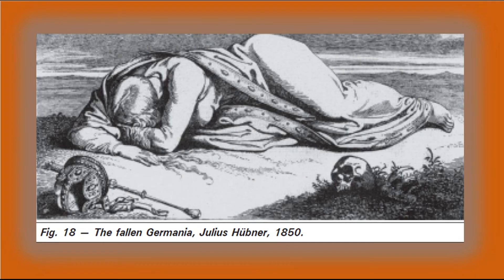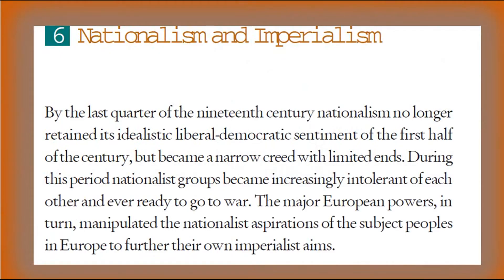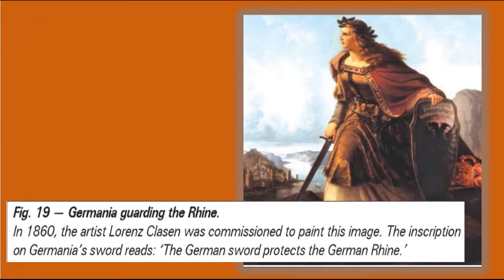This is the painting of the fallen Germania from 1850, and this is Germania guarding the Rhine — the Rhine mountains. This is all related to allegory and the visualization of the nation state.